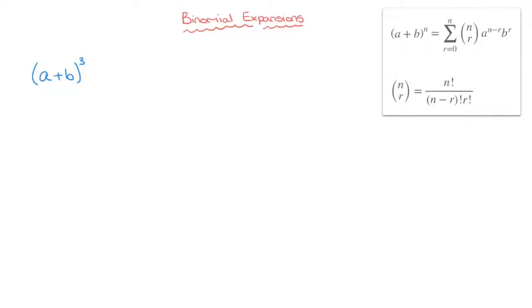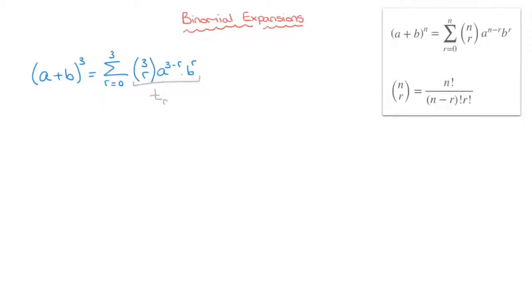So this equals the sum from r equals 0 up to 3 of the binomial coefficient 3r times a raised to the power of 3 minus r times b raised to the power of r. All I've done is copy the right-hand side of the formula, replacing every n by 3. The next thing I like to do is define the general term of this sum — everything underlined in gray — as t sub r. This allows me to state that this equals the sum from r equals 0 up to 3 of t sub r.